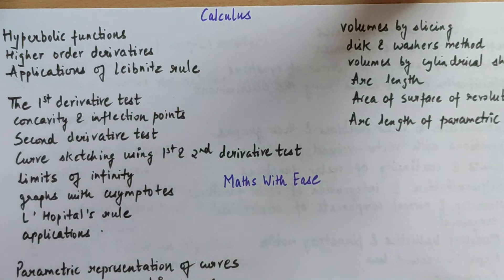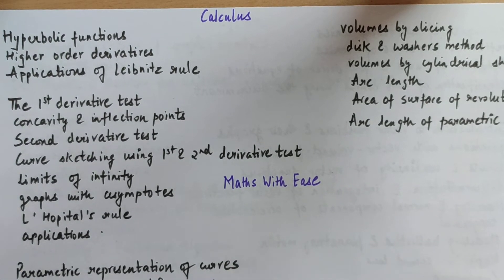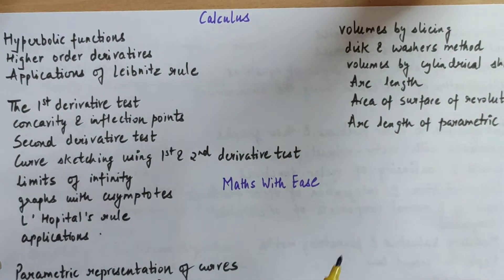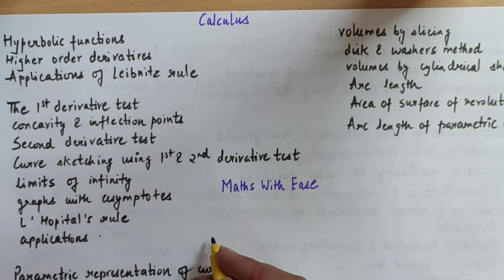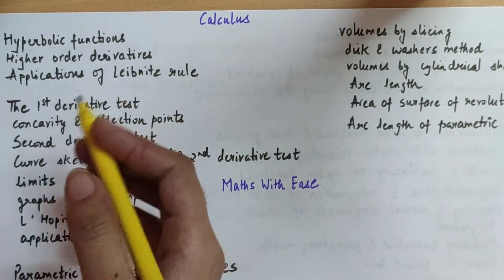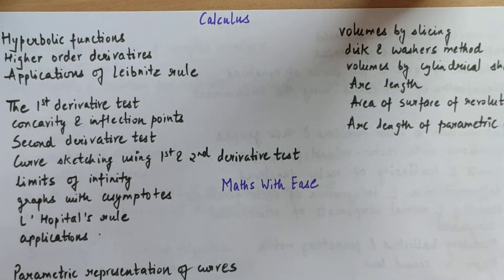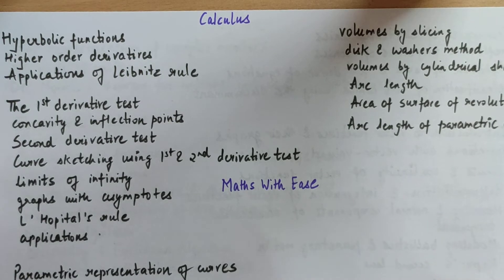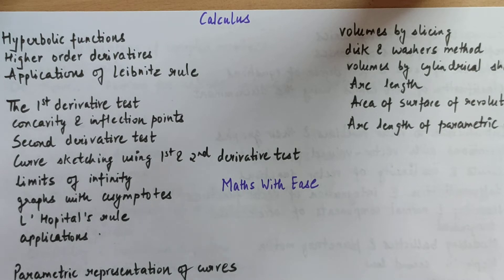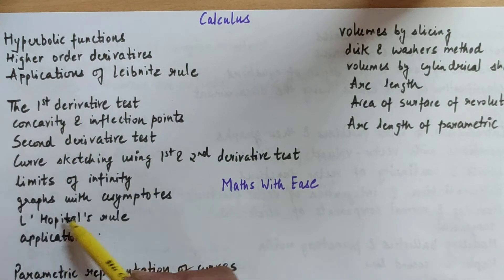You can take a screenshot of the syllabus. The Calculus syllabus is divided into various parts or sections. The first section consists of these topics: hyperbolic functions, higher order derivatives, applications of Leibnitz rule. Second is: first derivative test, concavity and inflection points, second derivative test, curve sketching using first and second derivative test, limits of infinity, graphs with asymptotes, L'Hôpital's rule applications. Many topics from this particular part we have already studied in Class 12th.